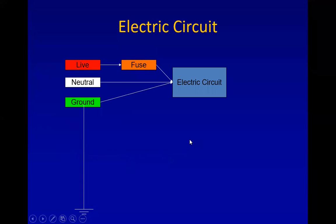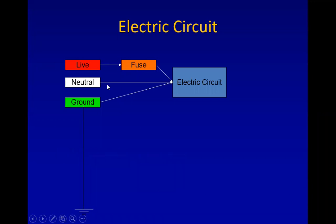Most equipment has an electric circuit and usually there are three connections: the live wire, which is connected to the fuse; the neutral wire; and a ground connection. These three connections are connected to the electric circuit of the equipment.